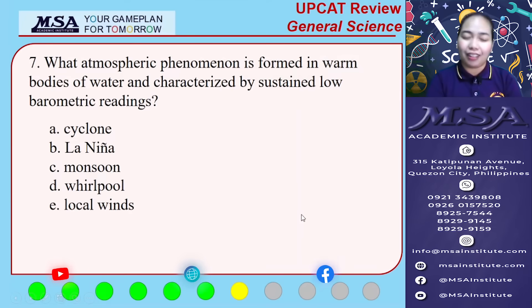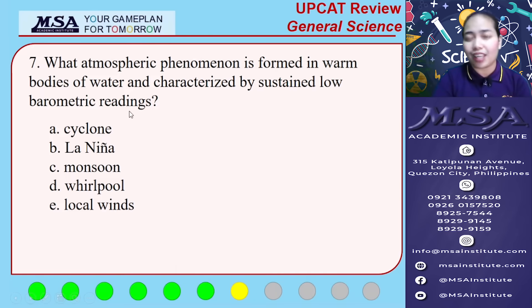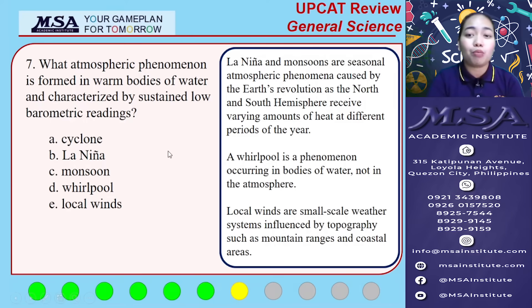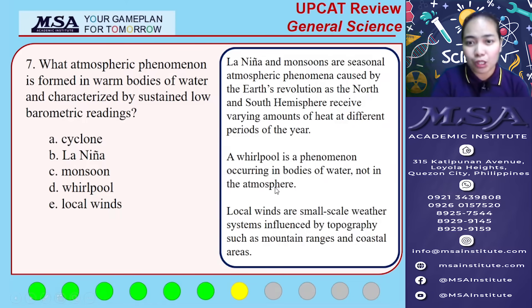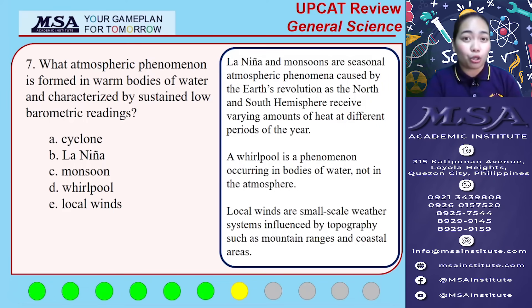Number seven: what atmospheric phenomenon is formed in warm bodies of water and characterized by sustained low barometric readings? La Niña and monsoons are seasonal atmospheric phenomena, so we can eliminate them. A whirlpool is a phenomenon occurring in bodies of water but not in the atmosphere, so it is not the answer. Local winds are small-scale weather systems influenced by topography, so local winds is also not the answer.